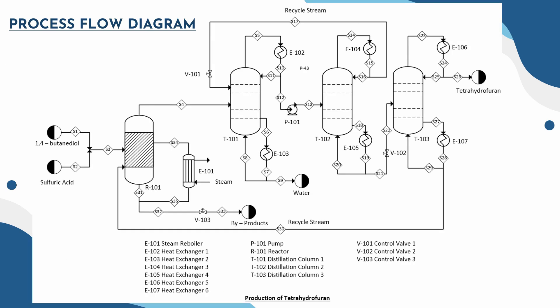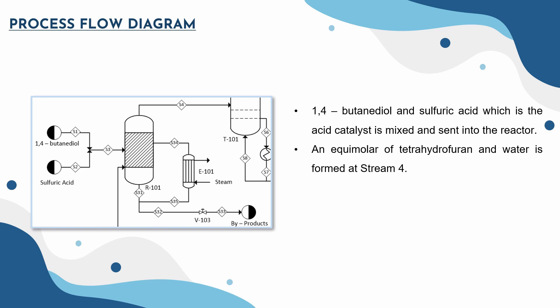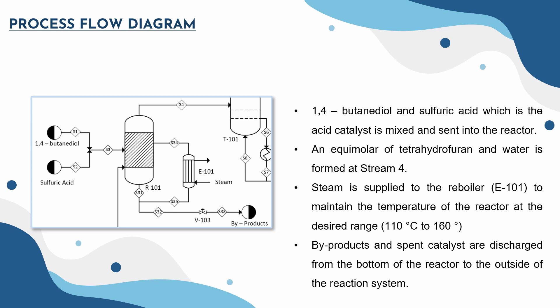The process flow diagram of the production of tetrahydrofuran. Let's focus on the main reactor R101 first. 1,4-butanediol and sulfuric acid, which is the acid catalyst, is mixed and sent into the reactor. An equimolar mixture of tetrahydrofuran and water is formed at stream 4. Steam is supplied to the reboiler E101 to maintain the temperature of the reactor at the desired range. Byproducts and spent catalysts are discharged from the bottom of the reactor.